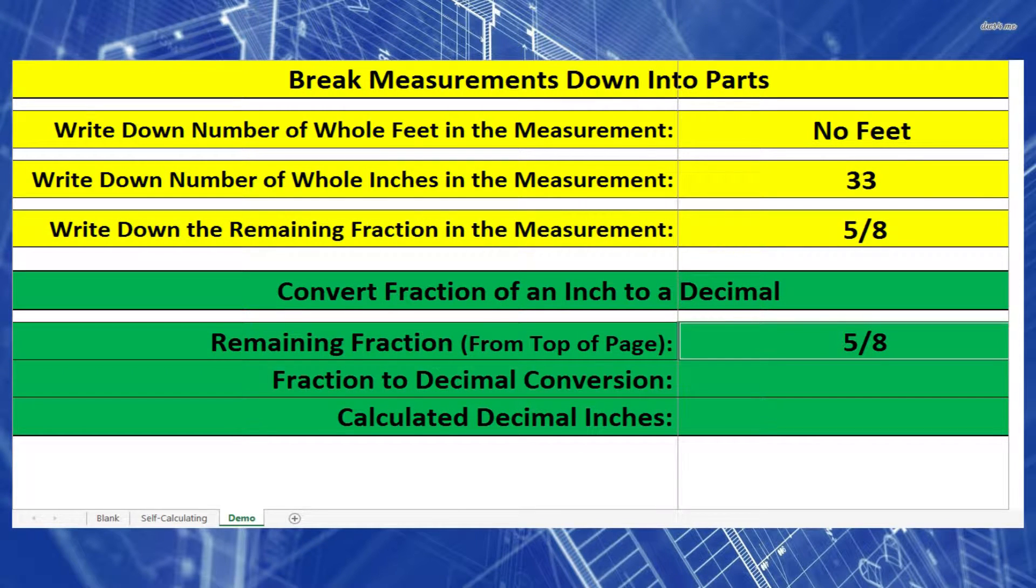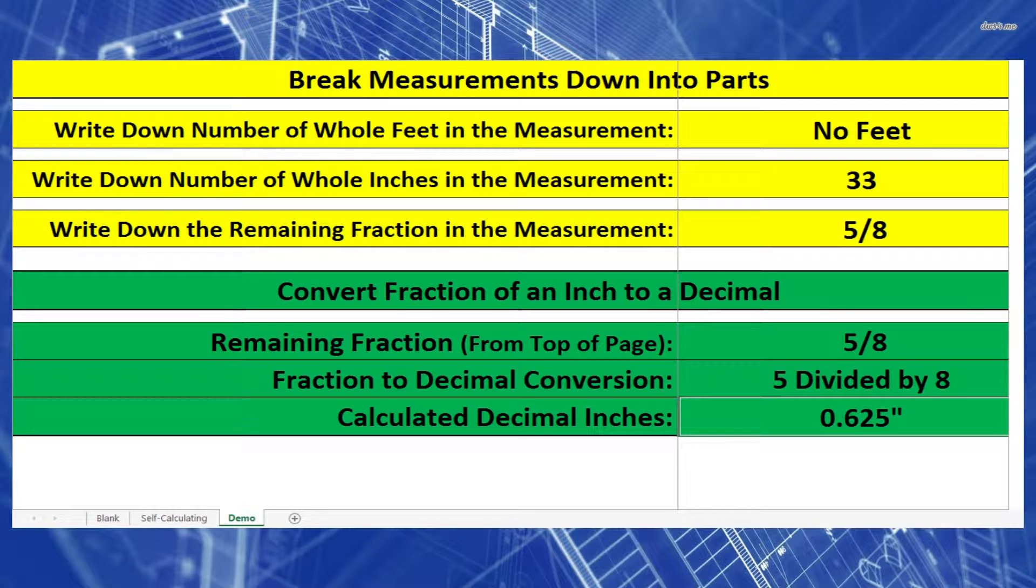Now let's start with the fractions of an inch. We need to convert this into decimal inches. In order to do that, I need to take the top number, 5, and divide it by the bottom number, 8. When I put that through my calculator, I should get 0.625 inches.